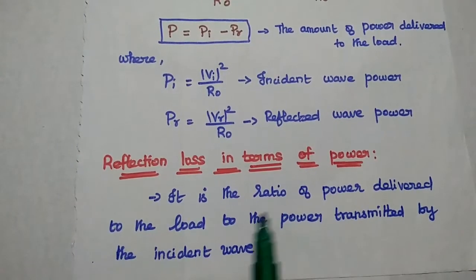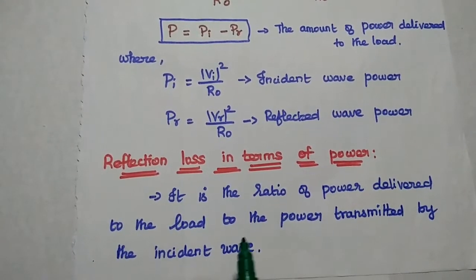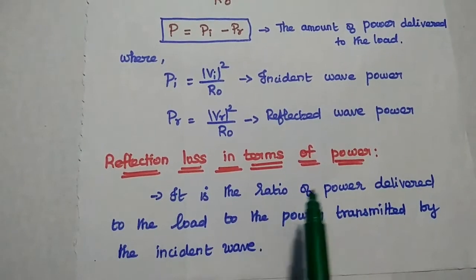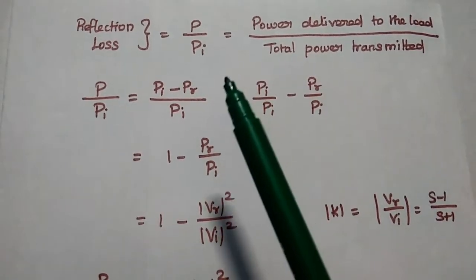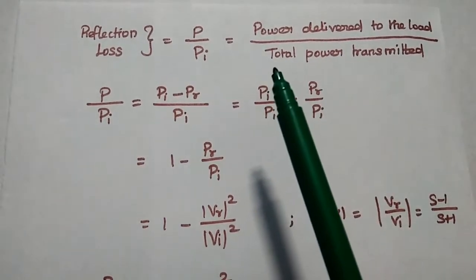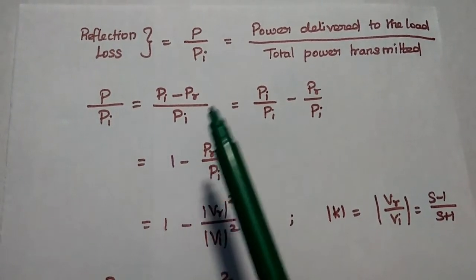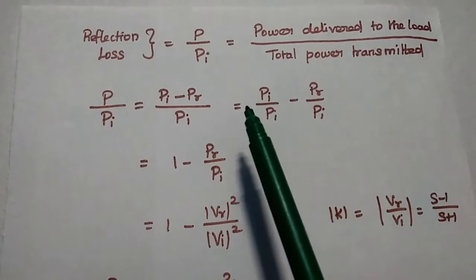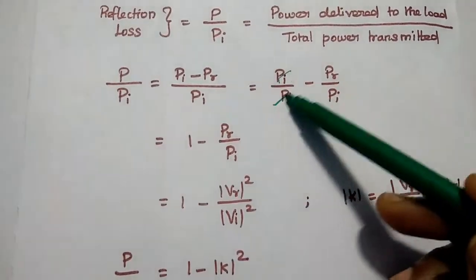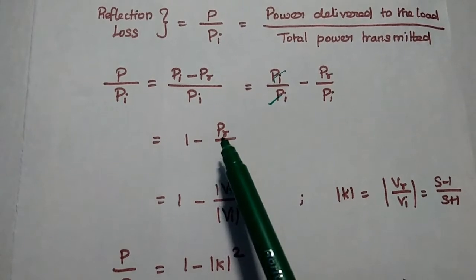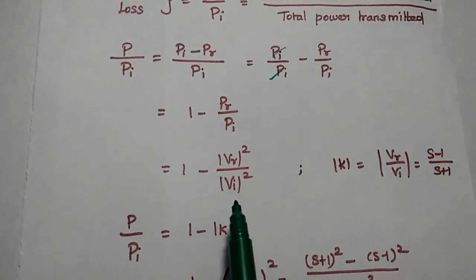Reflection loss is the ratio of power delivered to the load to the power transmitted by the incident wave. Out of the total incident wave power, how much is getting delivered — that is the reflection loss. So reflection loss equals P divided by PI, where P is the power delivered to the load divided by total power transmitted. We can write P/PI as (PI − PR)/PI, which simplifies to 1 minus PR/PI. That ratio of reflected power to incident power can also be written as Vr² divided by Vi².